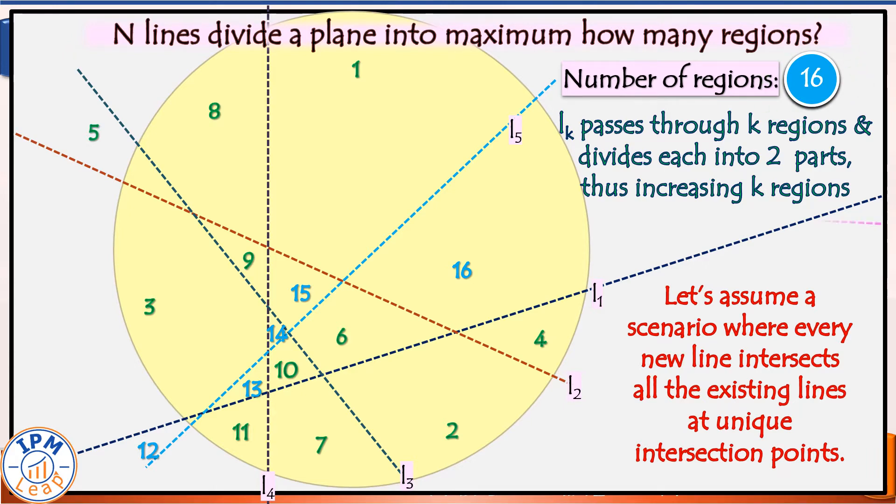And finally, line number 6, the pink line, intersects all the five previous lines and passes through these six regions. 1, 2,